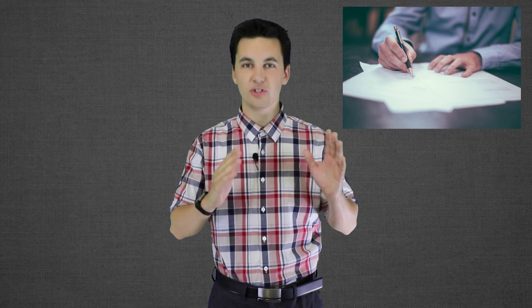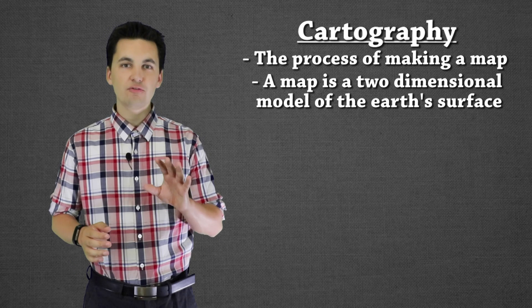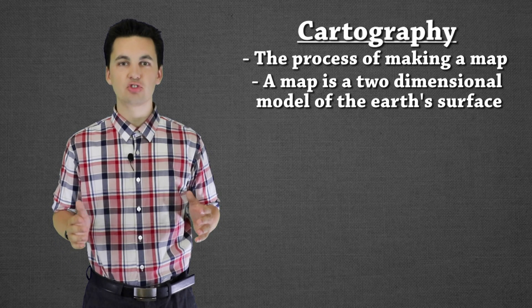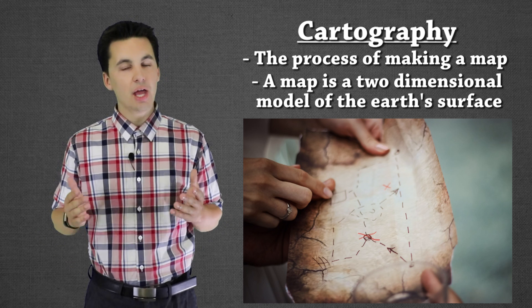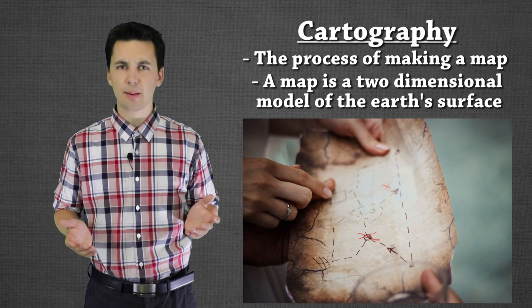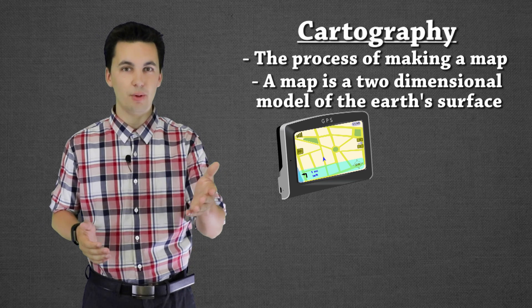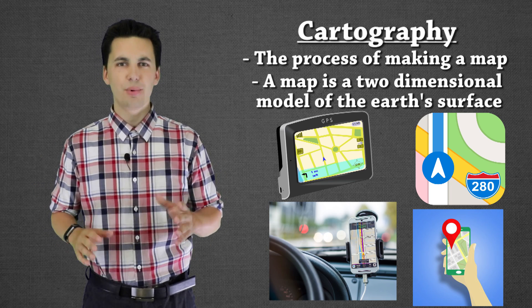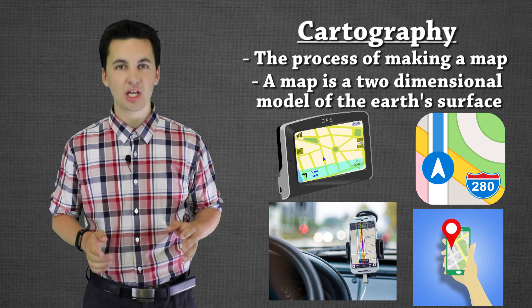Now enough of that — let's get on to learning about cartography. One of the most important tools of a geographer is a map, and the process of making a map is known as cartography. A map is a two-dimensional model of the earth's surface, and they've changed a lot. Originally maps were used as just a way of getting from one place to another, but over the years they've continued to evolve. We don't think about maps a lot in our day-to-day lives — minus a GPS on your phone, Apple Maps, Google Maps — but that's really the extent most people use maps for.